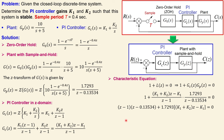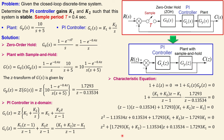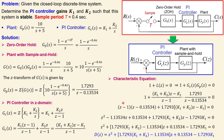We now have the expression and want a polynomial form. Working out the parentheses and collecting all terms: (z-1)*(z-0.13534) is expanded, and then all z-squared, z, and constant terms are collected together. This gives the final characteristic equation D, which is the denominator of the closed-loop transfer function with coefficients in terms of k1 and k2.